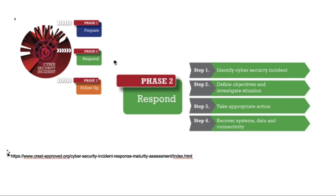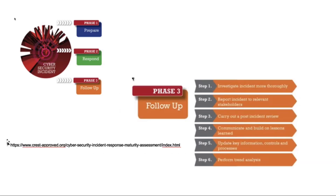In phase two — respond — you need to identify what constitutes a cybersecurity incident. For example, if somebody leaves a USB key on your desk, you plug it in, and download malware — that is a security incident. But if someone throws a rock through a window in your building, that is a physical security incident, not a cybersecurity incident. The way you handle a cybersecurity incident will be different from handling other types of incidents. Then you may need to trigger the business recovery or business continuity plan if the incident requires it.